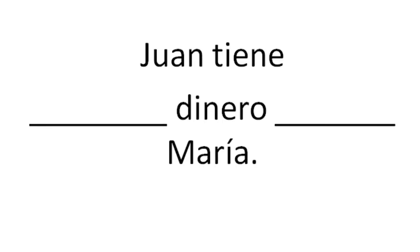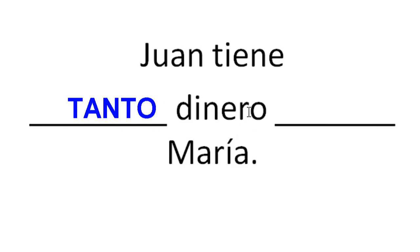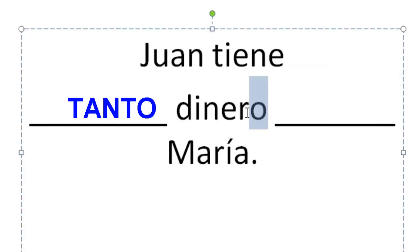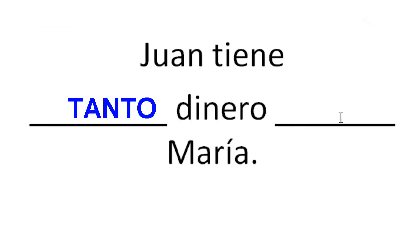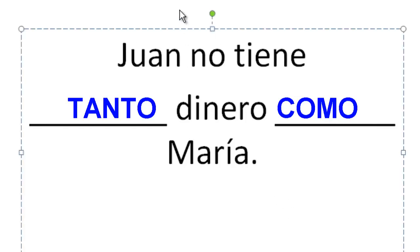Here are our next examples. Juan tiene blank dinero blank María — Juan has blank money blank María. Since dinero is a noun, not an adjective, we use tanto. Dinero is singular, so it's tanto — tanto dinero, and then what goes in the blank? Como. Juan tiene tanto dinero como María — he has as much money as María. Or no tiene tanto dinero como María — he does not have as much money.